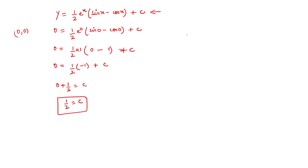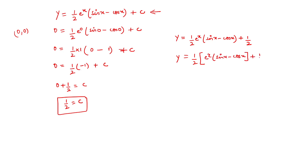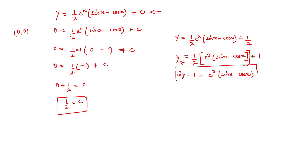Now we put C = 1/2 back into our general solution: y = (1/2)e^x(sin x − cos x) + 1/2. Taking 1/2 as common: y = (1/2)[e^x(sin x − cos x) + 1]. Multiplying both sides by 2: 2y = e^x(sin x − cos x) + 1, so 2y − 1 = e^x(sin x − cos x). This is the particular solution for question 15.